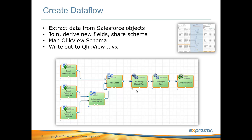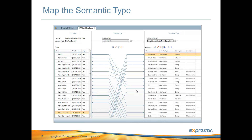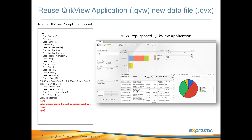In order to do this properly, I will need to map the ClickView schema to the Expressor metadata semantic type. Now that we have a properly constructed QVX data file, we can modify the load script of the existing QVW ClickView application and feed the visualizations from it.